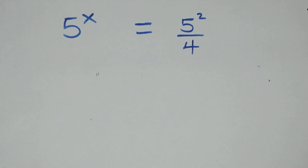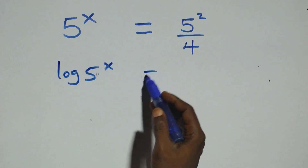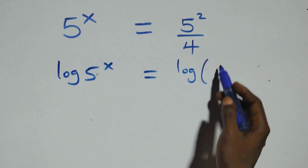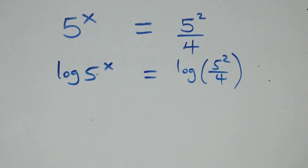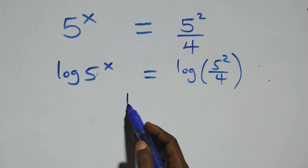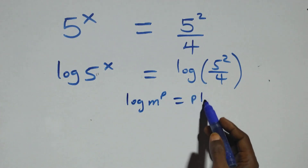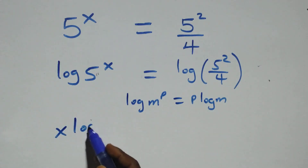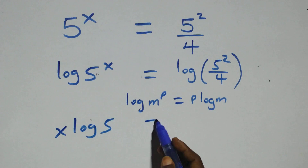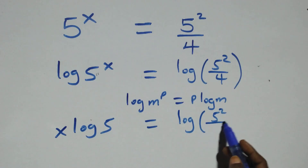We take the log on both sides: log of 5 raised to power x equals to log of 5 squared over 4. We apply the power rule of logarithms — when we have log m raised to power p, this is the same thing as p log m. So we have x log 5 equals to log of 5 squared over 4.